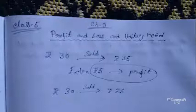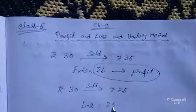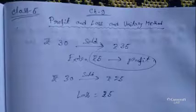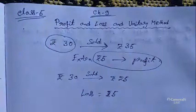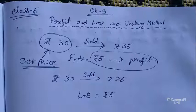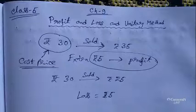here you are losing rupees 5 — this is the case of loss. Now, the rupees 30 in the first case is called the cost price. Cost price means the price value by which you are buying a thing, or someone is buying a thing.